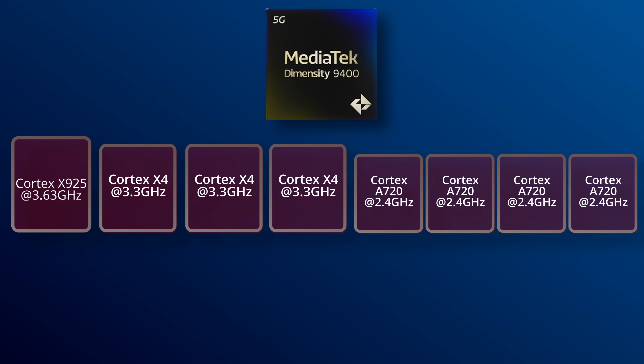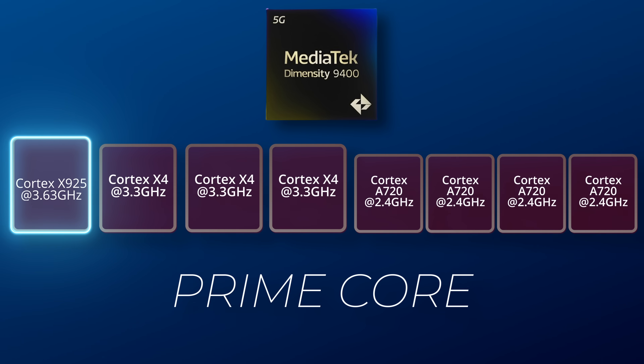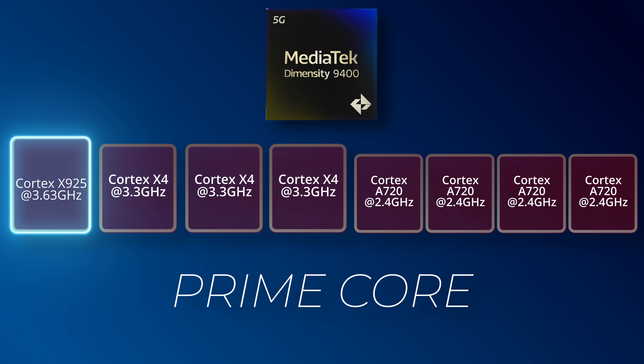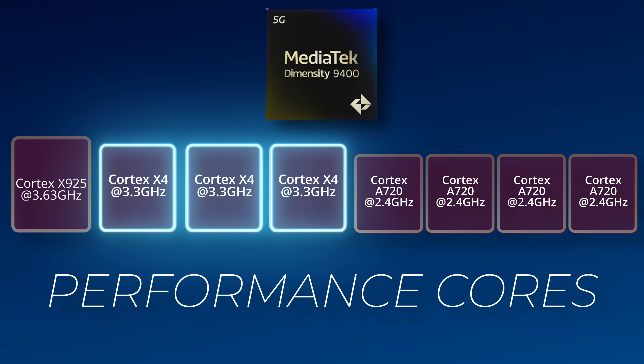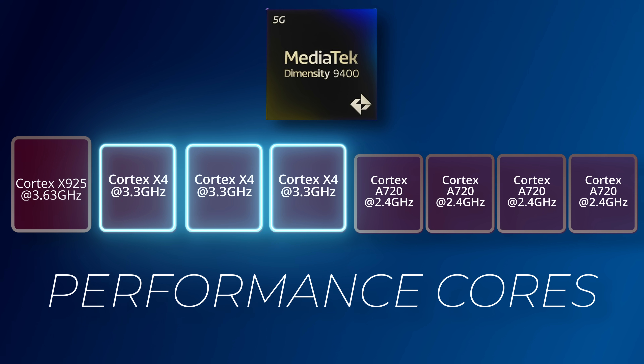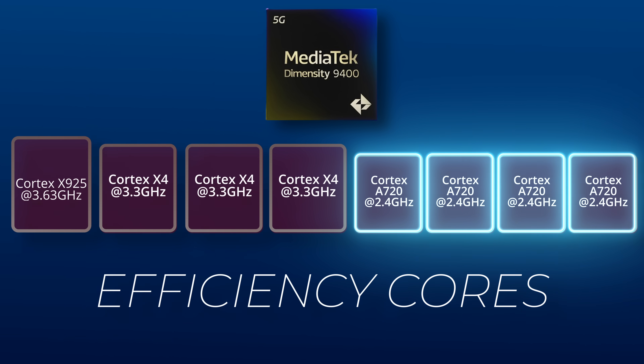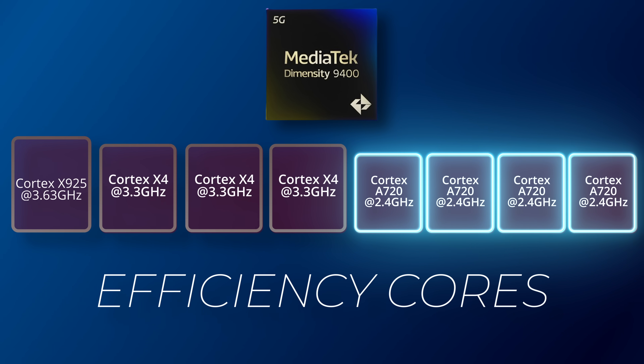In all flagship chips, there are different types of cores — a very powerful prime core, multiple performance cores, and multiple efficiency cores. In the Dimensity 9400, there is a Cortex X925 prime core clocked at 3.63 GHz, 3 Cortex X4 performance cores at 3.3 GHz, and 4 Cortex A720 efficiency cores at 2.4 GHz.